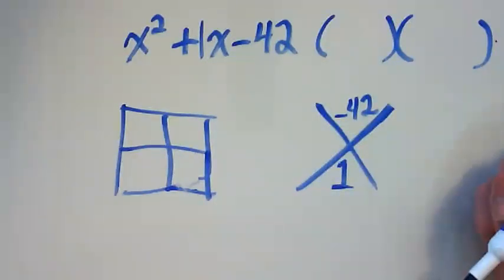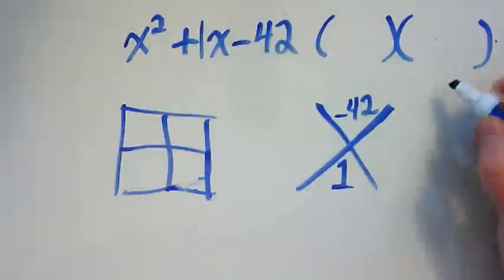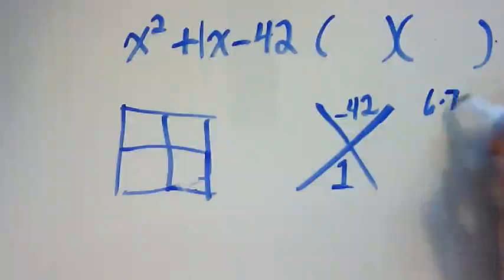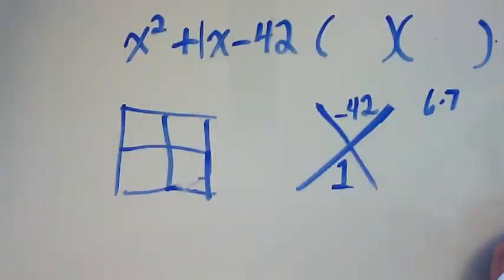So I want you to think about your times tables and what you know about factor pairs that could lead to 42. And if I think about it, the most common factor pair that we know from our times tables is six and seven that would lead to 42.